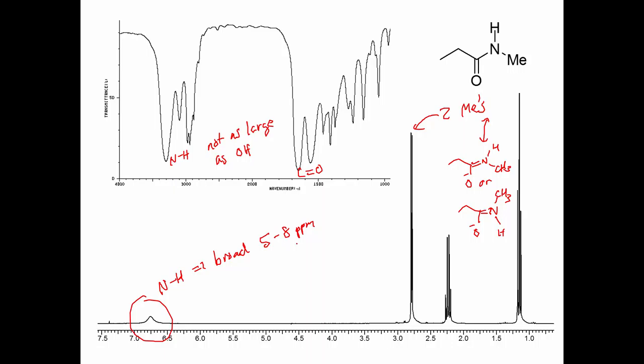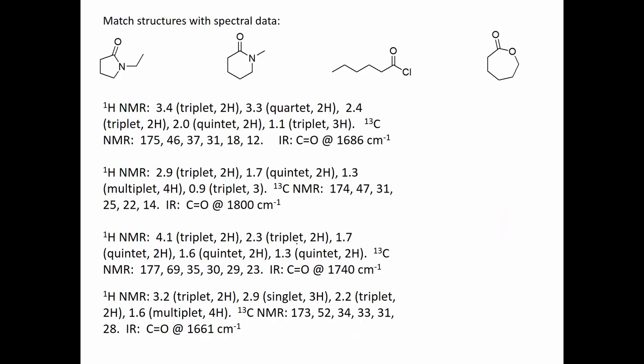It doesn't come quite as far, doesn't have quite as high a chemical shift as the OH of a carboxylic acid. Because nitrogen is not as electronegative as oxygen. So, it comes at a lower chemical shift. Recall that the OH group of a carboxylic acid would come usually between like 11 and 15 parts per million.